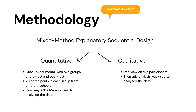For the quantitative research design, a quasi-experimental design with two groups — pre-test and post-test — was used, involving 20 participants in each group from different schools in order to avoid biases.